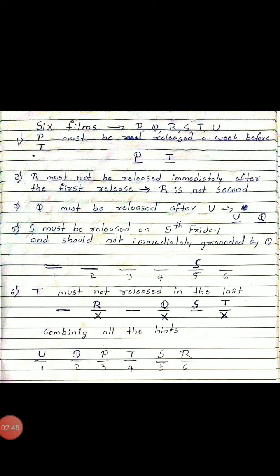Working out the order: P and T are consecutive with P before T. U and Q are consecutive with U before Q. S is fixed on week 5. So the derived order is: Week 1 = U, Week 2 = (available), Week 3 = P, Week 4 = T, and Q in week 4 — U in week 3, Q in week 4, S in week 5.